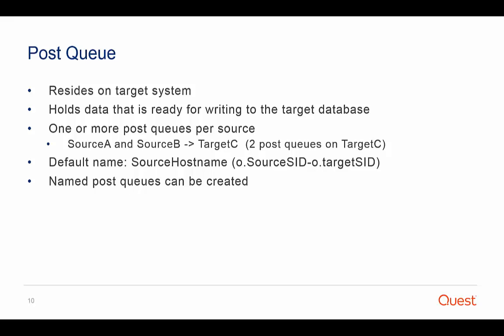The post queue resides on the target system. It holds data that is ready for writing to the target database. On each target system, there is one post queue for the replication stream between a source and target Oracle instance. For example, if source A and source B are both replicating to target C, then there will be two post queues on target C. You can instruct SharePlex to create additional named post queues for more complex replication strategies. A default post queue is identified by the name of the source system and the source and target Oracle instances.